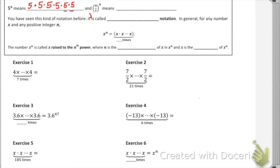And that should happen one, two, three, four, five, six times because of that power of six. And so nine-sevenths to the fourth just means nine-sevenths as a factor four times, or nine-sevenths times nine-sevenths times nine-sevenths times nine-sevenths. And again, that's something you should already be familiar with.